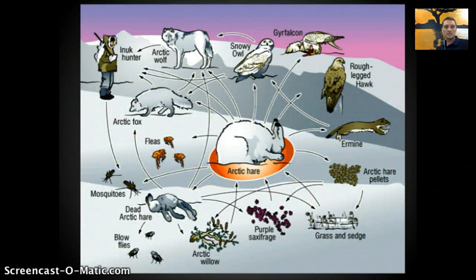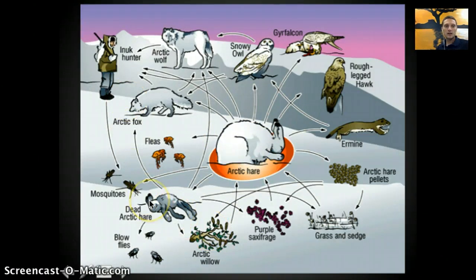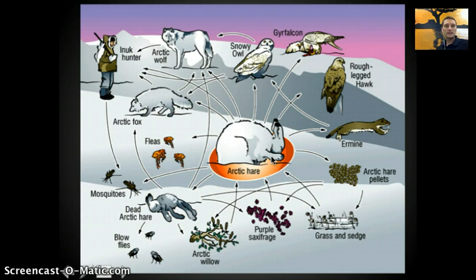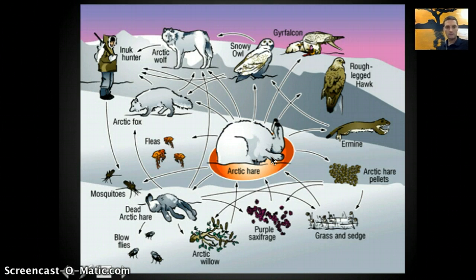Here's a really nice image that represents a food web. You can see arrows going in a wide variety of directions — the Arctic hare, in this case, is providing a food source for a variety of different organisms, because many organisms depend on it to survive. You can go through this image and identify what consumer and trophic levels each organism occupies. Importantly, depending on what an organism is eating, its consumer and trophic levels can change. Take a moment to pause the video and try to identify those levels.